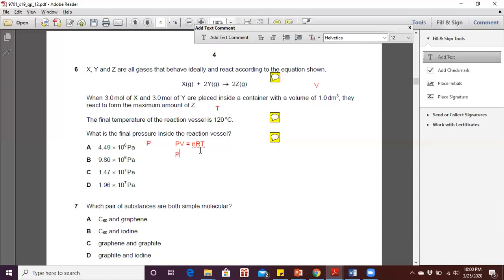So our aim here is to find the P-value, so we are going to move the V to the other side. So we have P equals to nRT divided by volume.